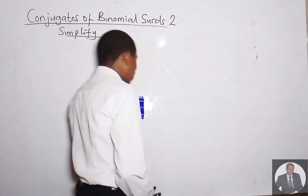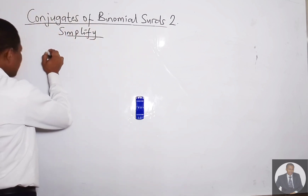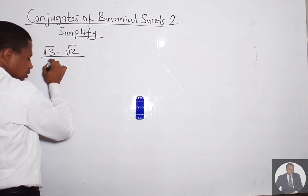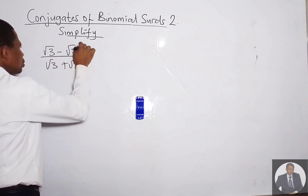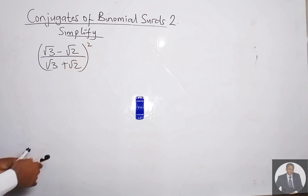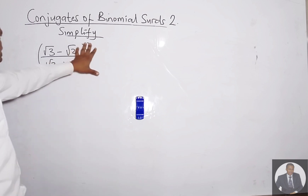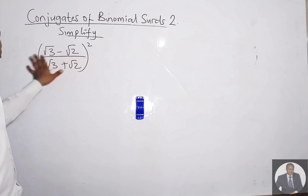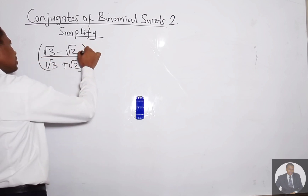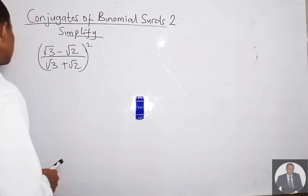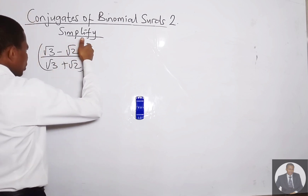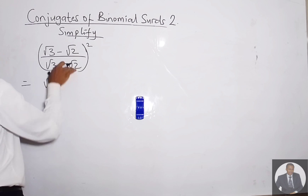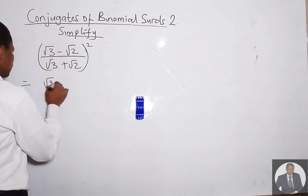Here is the last question on conjugate surds. This particular question is very different and unfamiliar compared to every other question we've been doing. Every other question did not require a square, but this one stipulates that there is a square. So first, we treat it as if there were no square, expressing the denominator as the conjugate of the numerator.